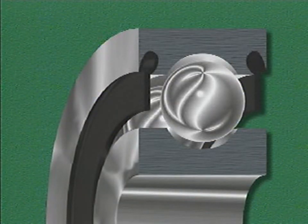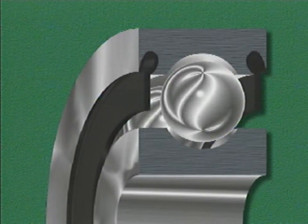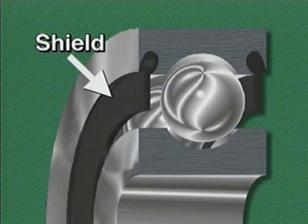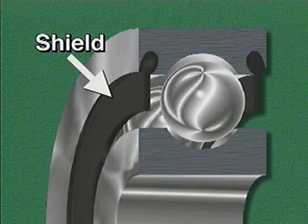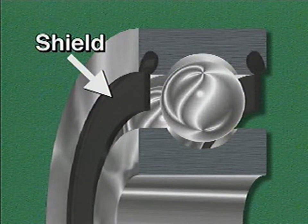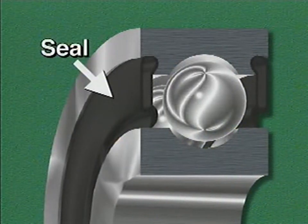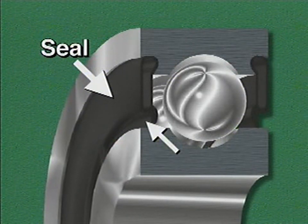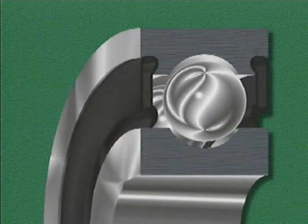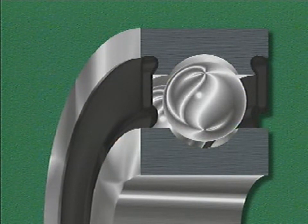In addition to these parts, some rolling contact bearings are equipped with devices that protect them from dirt and other contaminants. One type of protective device is a shield. A shield can prevent all except the very smallest contaminants from entering a bearing, and is usually attached to the ring that does not rotate. Another type of protective device is a seal. A seal is similar to a shield, but it has a lip that rubs against the ring that rotates. Seals are used primarily on permanently lubricated bearings because they prevent the lubricant from leaking out.